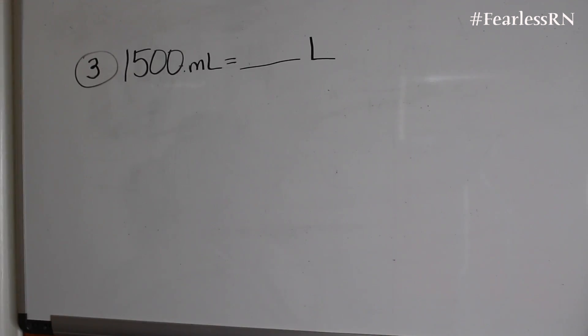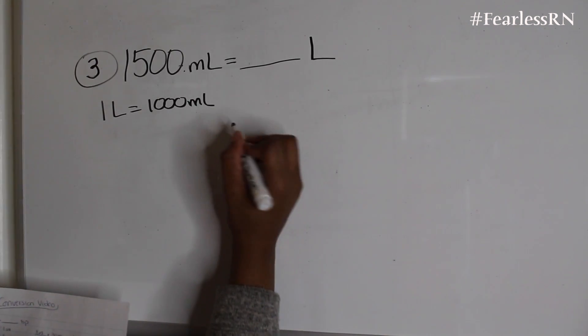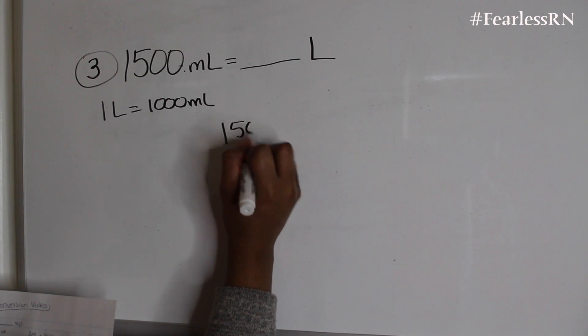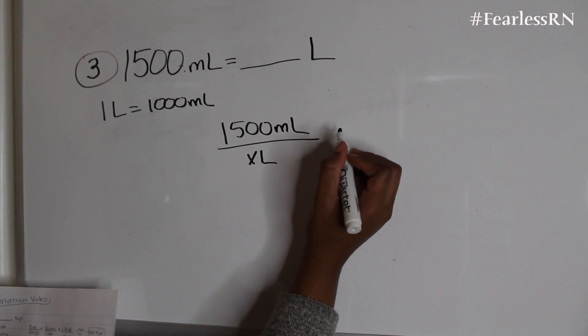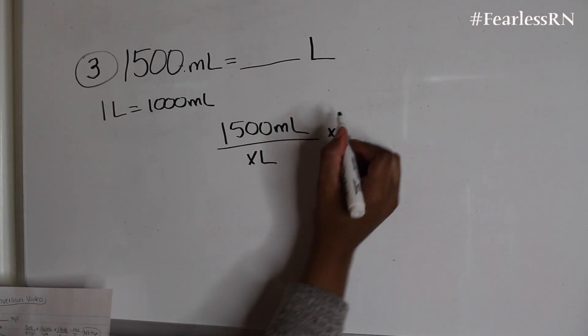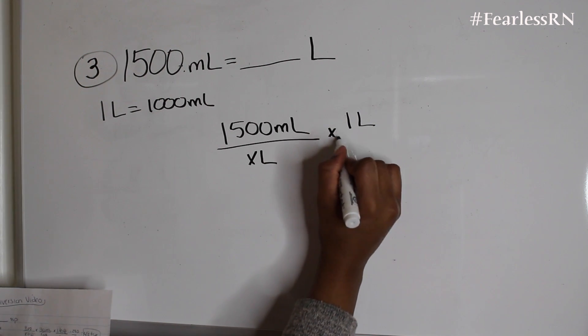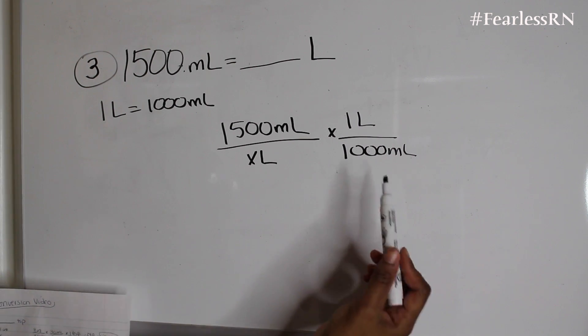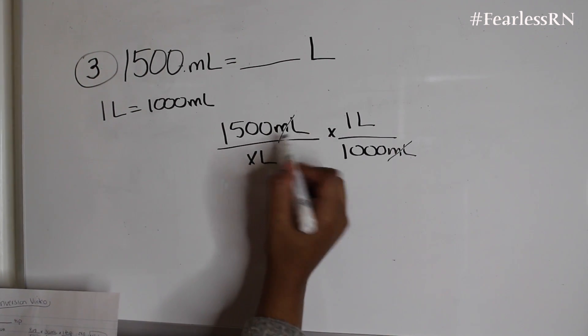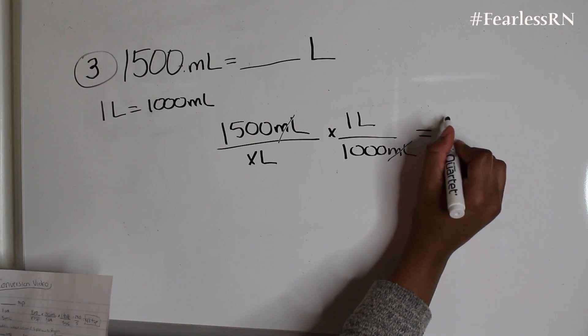1,500 milliliters equals how many liters? So now you have to go back to your metric table and you'll find that 1 liter equals 1,000 milliliters. Let's set up our problem. So we're going to put 1,500 milliliters over x liters, and we're going to put the conversion on top right here over 1,000 milliliters. So since we know that we're looking for liters, we're going to cross out the mls, and now we're going to multiply straight across.